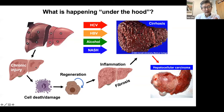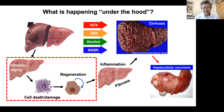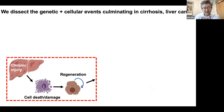This is a very complicated process and has been a challenge to study. It involves acute and chronic damage, which relates to cell death and then compensatory regeneration, which the liver is very good at. Given enough time, this leads to inflammation, fibrosis, and then cirrhosis. We want to understand what parts of these are adaptive and maladaptive in contributing to cirrhosis and liver cancer.